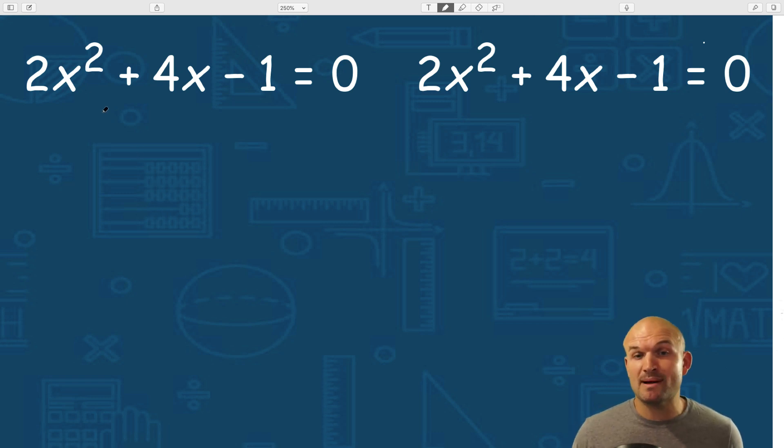All right, so the first thing we want to remember when completing the square is we cannot complete the square when our quadratic term has a coefficient of two. So there's a couple of different ways we can get around this. The first way we can do this is just factoring out the two. Now I can factor the two x squared or factor two out of that rather simply as well as out of a four x.